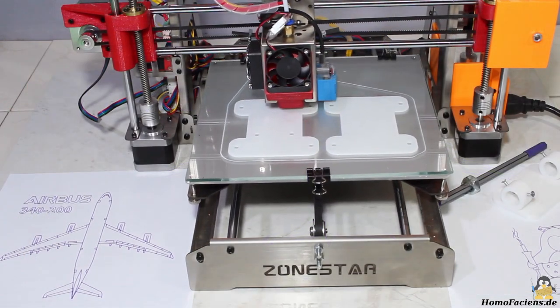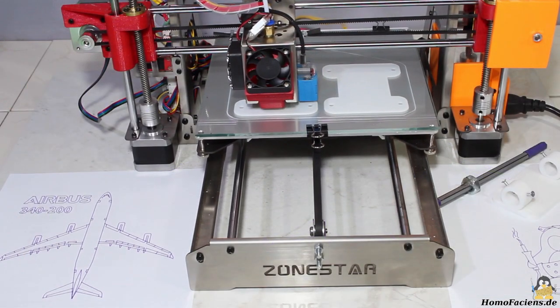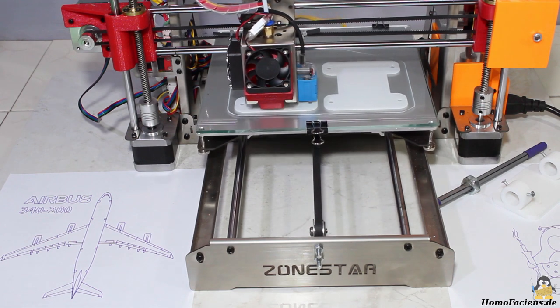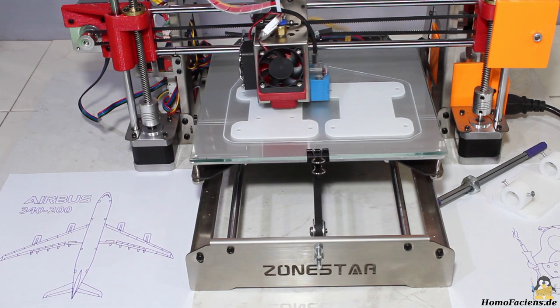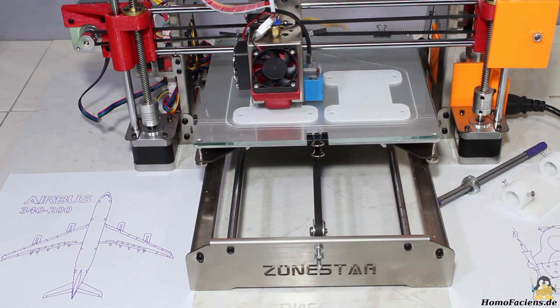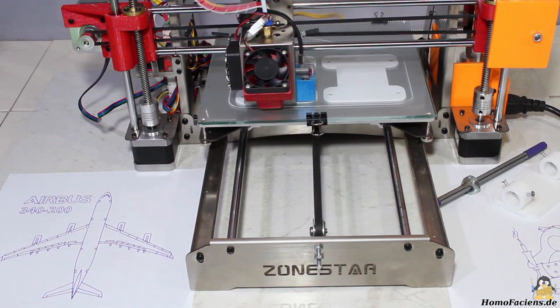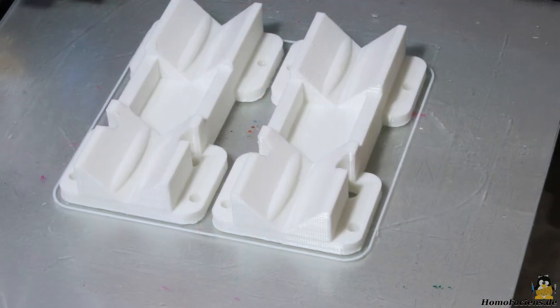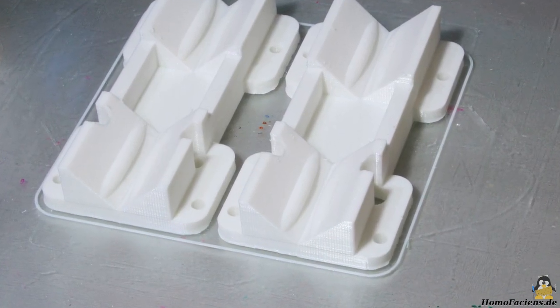Once more I was using the Zonestar in printer mode to create a couple more parts. In prototyping, the first print is usually not the final design. The parts shown here were simply a bit too wide. My second approach works fine.